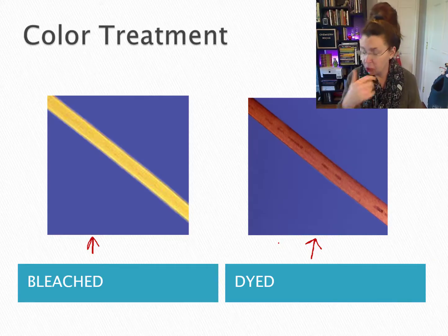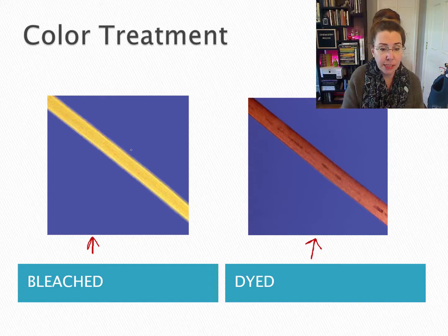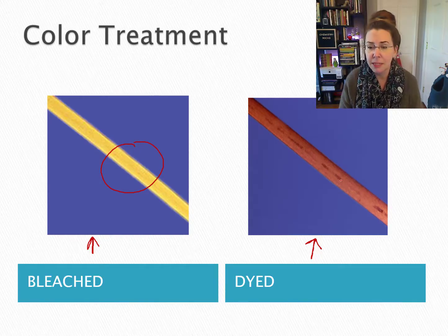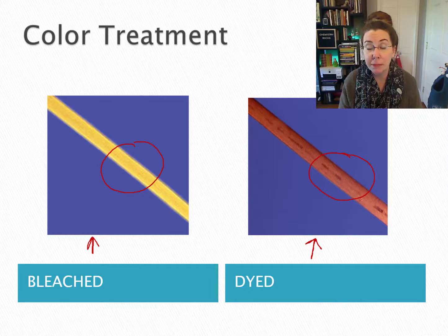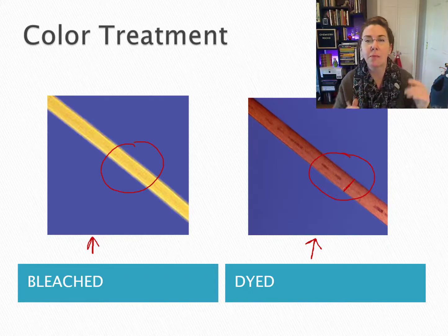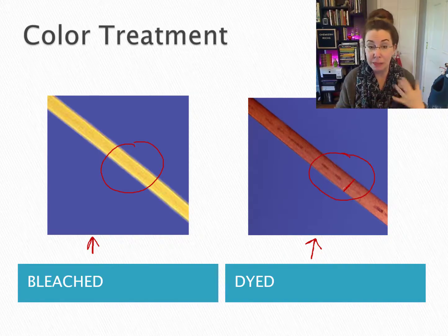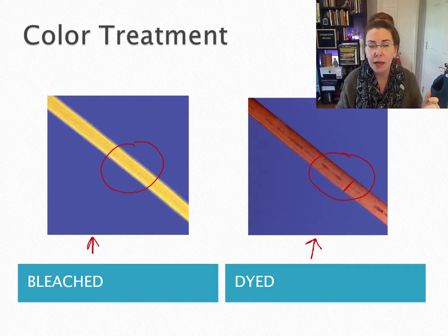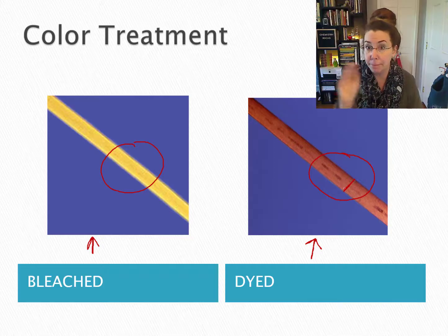If you look at this bleached hair, you can see there are no pigment granules anymore. They're still in there — they've just been chemically broken down. If you look at the dyed hair, you can still see some tiny granules of pigmentation, but it has a uniform color throughout because the dye is kind of overlaid over the top of the existing color. That's the difference between bleaching and dyeing, and why bleaching is so much more damaging — because you're lifting all the scales of the cuticle, allowing mechanical and heat damage to also happen much easier.